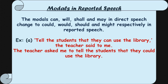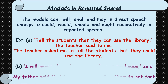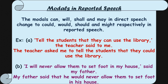Here is an example: Direct speech — 'Tell the students that they can use the library,' said the teacher. In indirect speech: 'The teacher asked me to tell the students that they could use the library.' So 'can' changes to 'could' in reported speech. Another example: Direct speech — 'I will never allow them to set foot in my house,' said my father. Reported speech: 'My father said that he would never allow them to set foot in his home.' So 'will' changes to 'would' in reported speech.